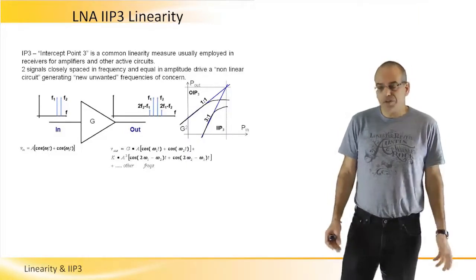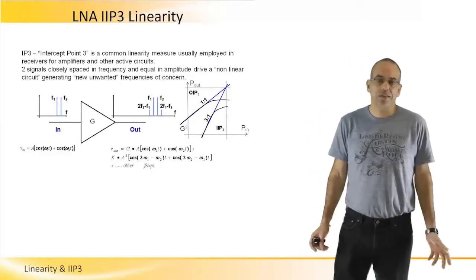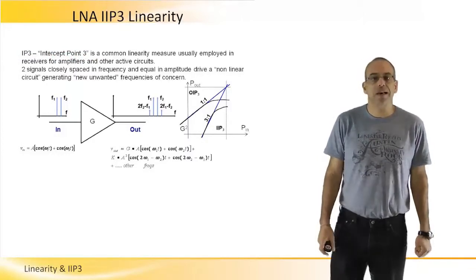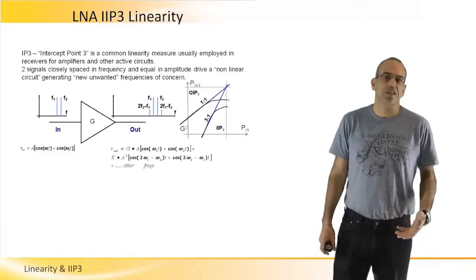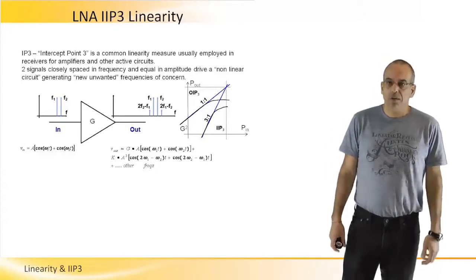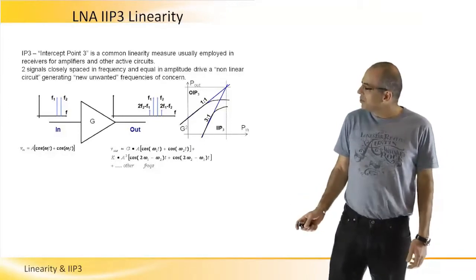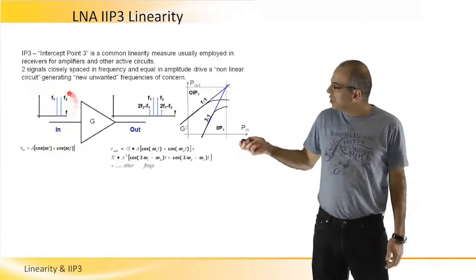The parameter that we usually use to define LNA linearity is intercept point 3, which I'm going to explain now. IIP3 stands for input intercept point 3. For IIP3, what we do is introduce two input signals